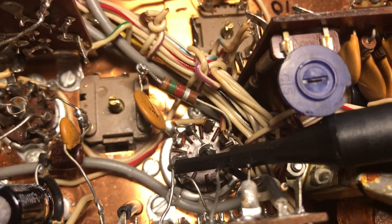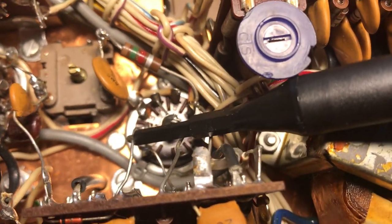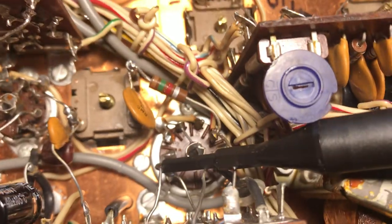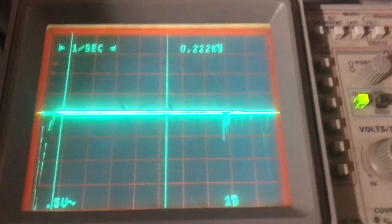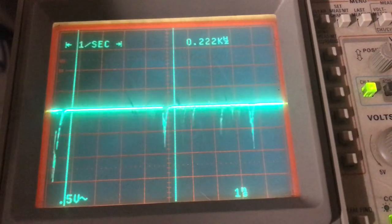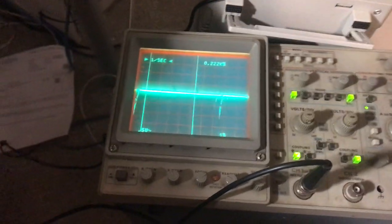You can validate it yourself. That's pin 2 of the 12X7. So there's the noise there going negative. It ought to trigger the grid of that tube.